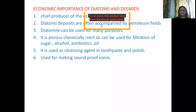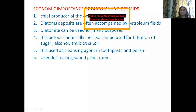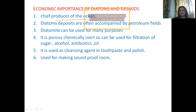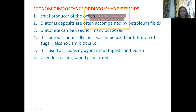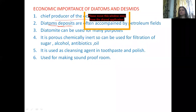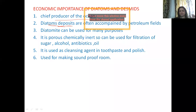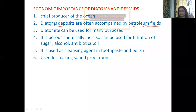Now let's move to Diatoms or Chrysophyta, which is your second group, and their economic importance. First, they are called the chief producers of the ocean. If there is photosynthesis in the ocean, at least 80% of the contribution is done by Diatoms. When diatoms die, their shells are not destroyed — the shell is deposited. From these deposits, diatomite or diatomaceous earth is formed. Where these deposits are made, petroleum fields are very commonly found, where extraction of petroleum can be done.